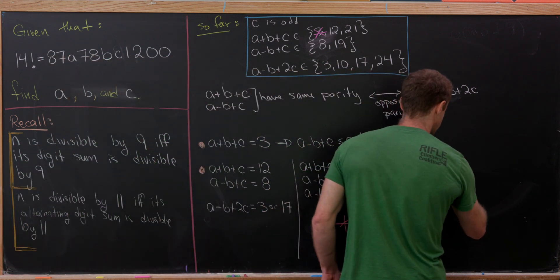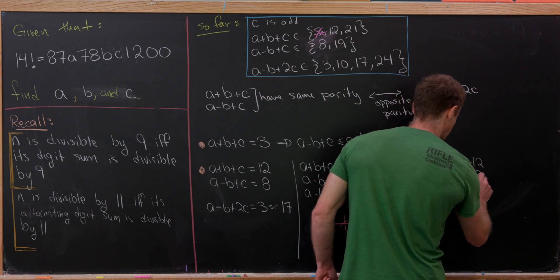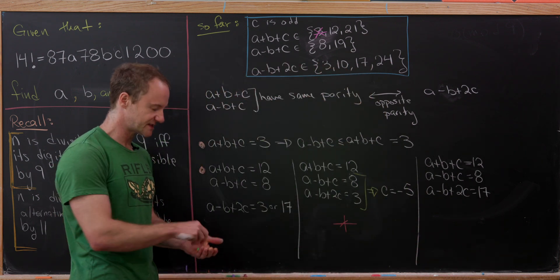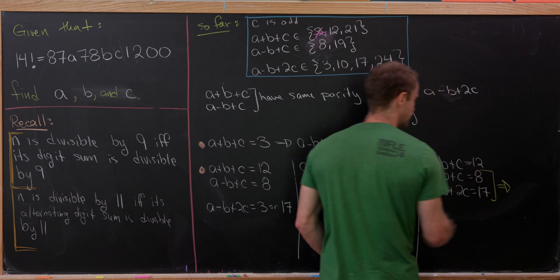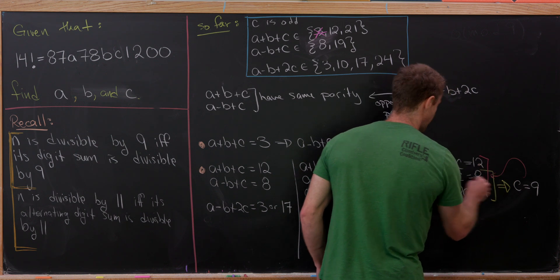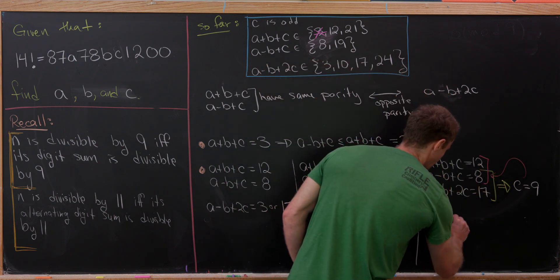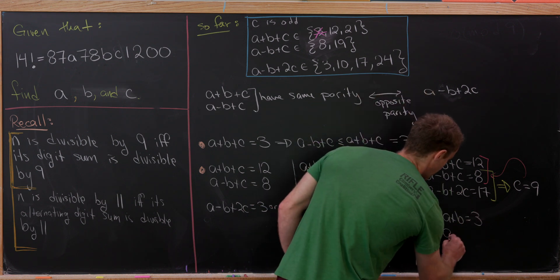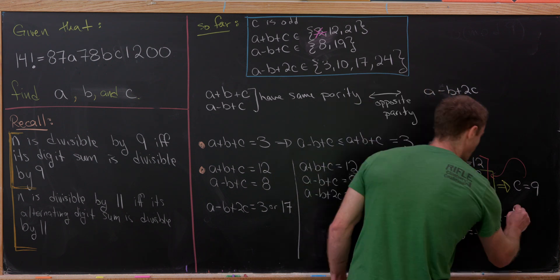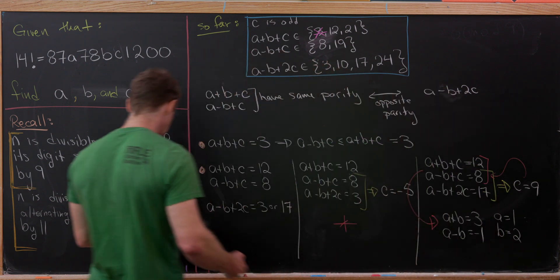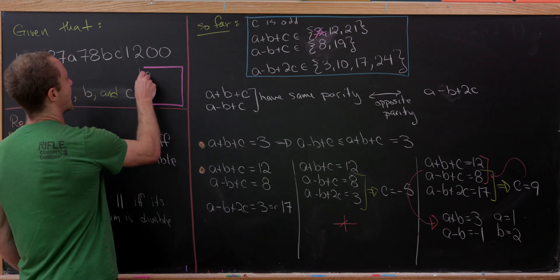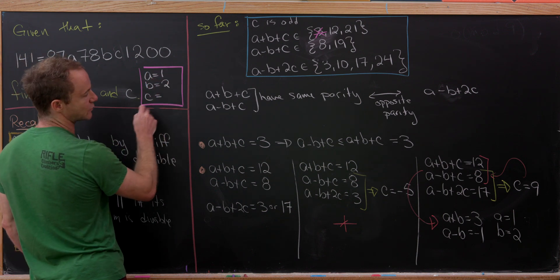Now try A − B + 2C = 17. So we have A + B + C = 12, A − B + C = 8, and A − B + 2C = 17. Subtracting the second from the third gives C = 9. Substituting C = 9 into the first two equations gives A + B = 3 and A − B = −1. Adding those: 2A = 2, so A = 1 and B = 2. Our first possibility: A = 1, B = 2, C = 9.